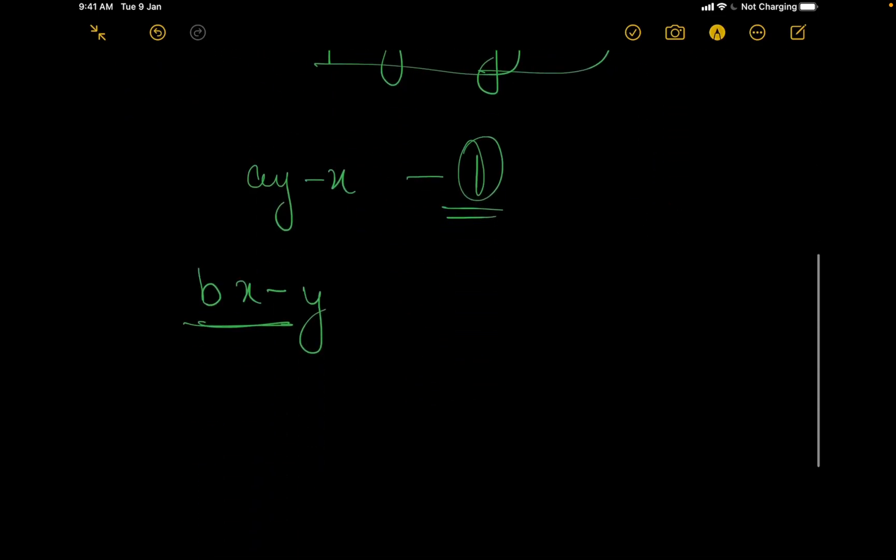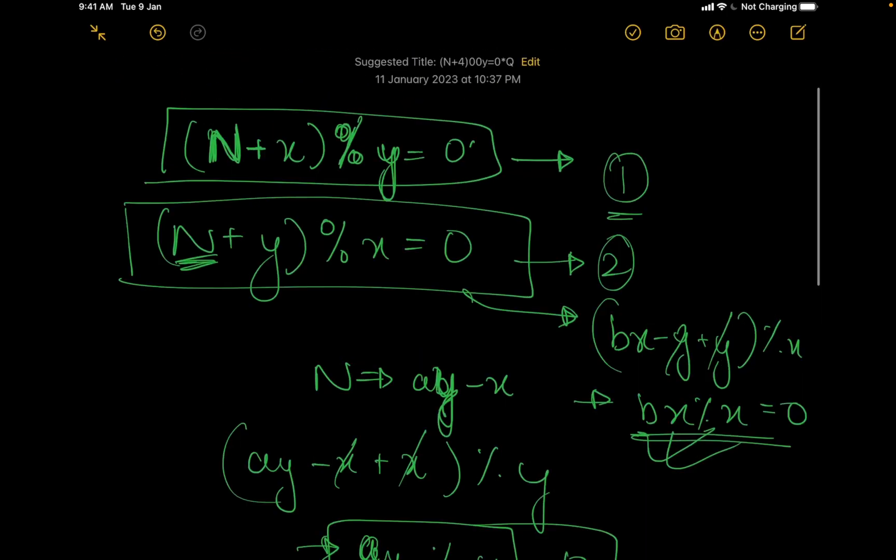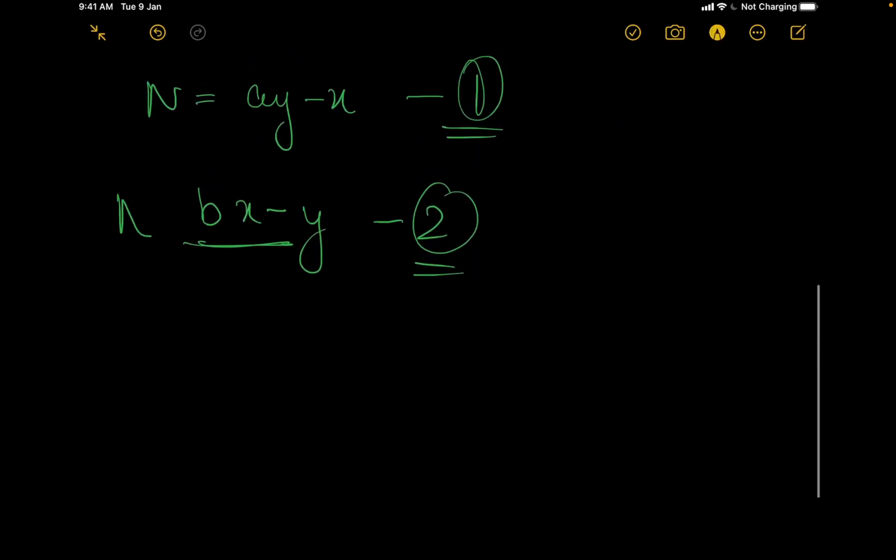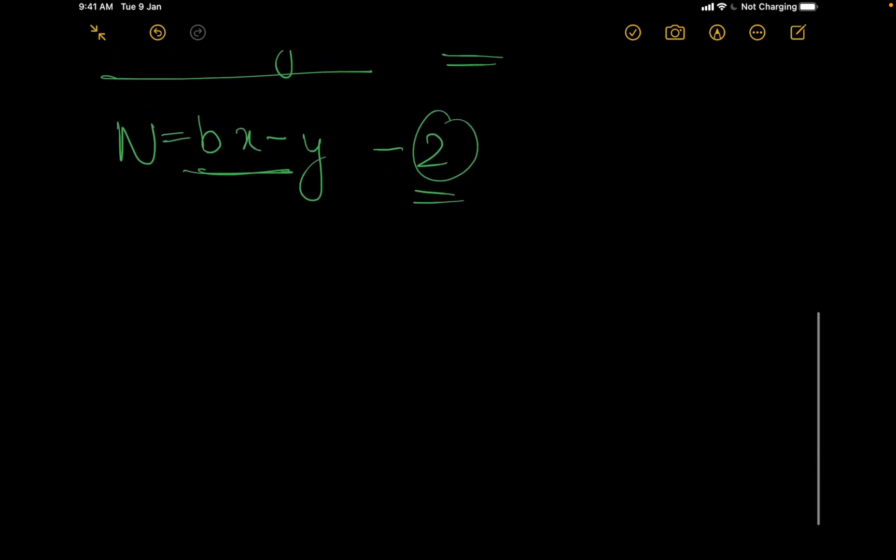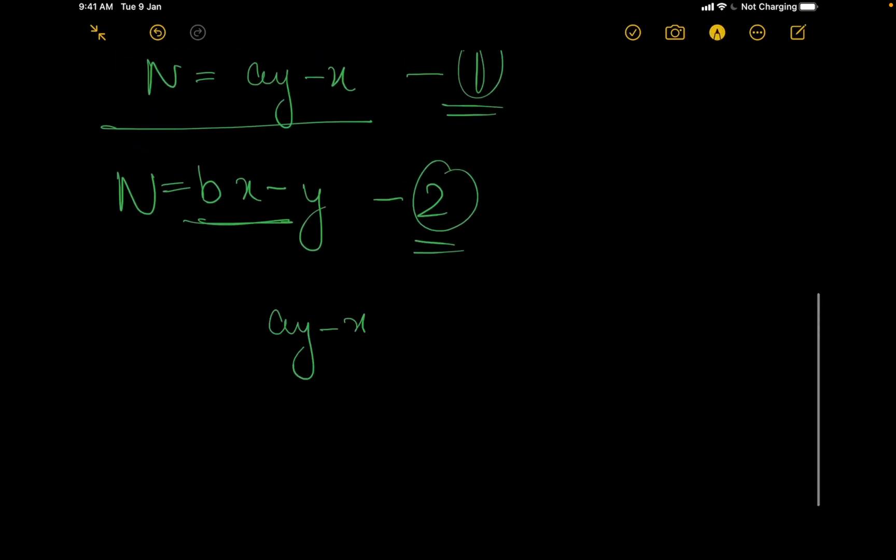Basically we want these two numbers. And since both the numbers are equal to n, we can actually equate them. We will get ay minus x is equal to bx minus y.